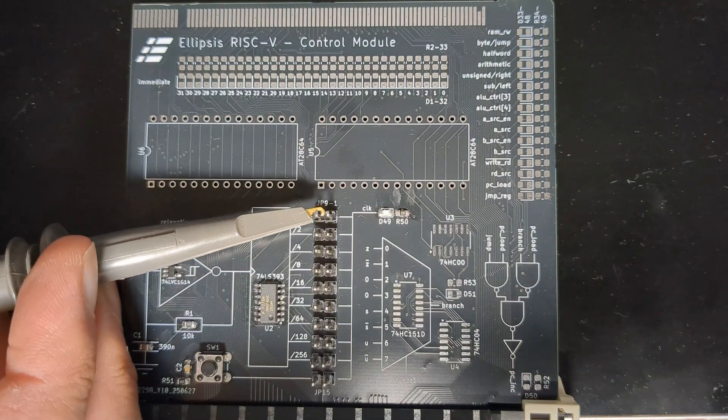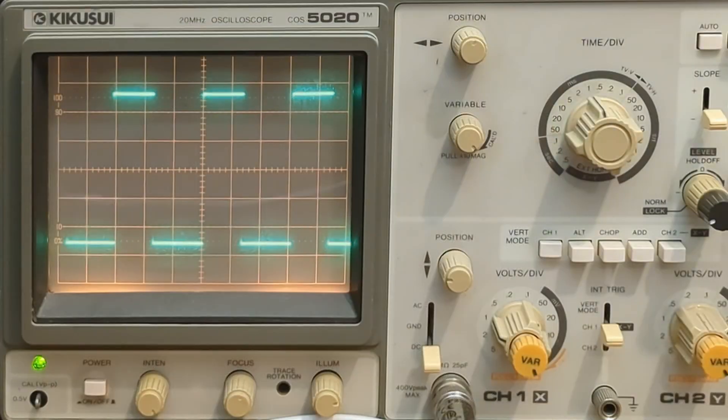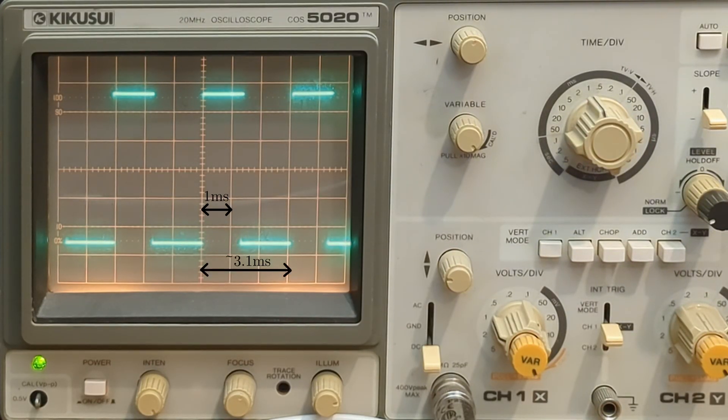If I connect up the old oscilloscope to the oscillator output, then we can check if this theory matches reality. The grid is set to one millisecond, and we can see that the clock period is a little over three of these, which lines up with our theoretical calculation of 3.16 milliseconds.